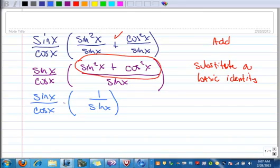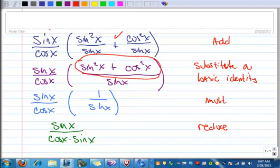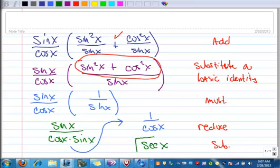So this becomes 1 over sine x. Okay, now I'm ready to multiply these two fractions together. So we've got more multiplying here. Multiply, and then when I multiply, multiplying across, I have sine x times 1 over cosine x times sine x. And now I have sine x in the numerator and the denominator, so I can reduce. And I am running out of room here, so we're just going to pretend we're going to continue it right over here. So I end up with 1 over cosine x. And now I'm going to do another substitution. 1 over cosine x is the same as secant.